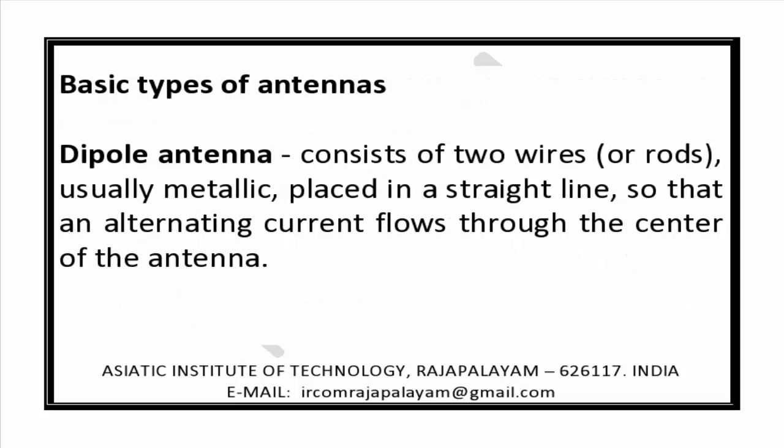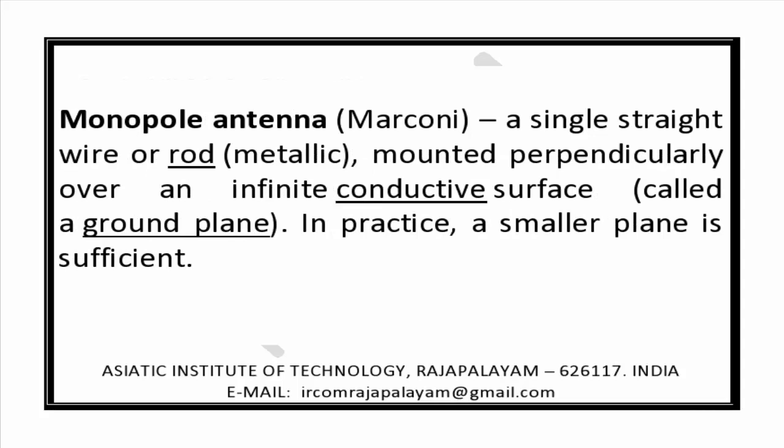Basic types of antenna. Dipole antenna: it consists of two wires or rods, usually metallic, placed in a straight line so that an alternating current flows through the center of the antenna.